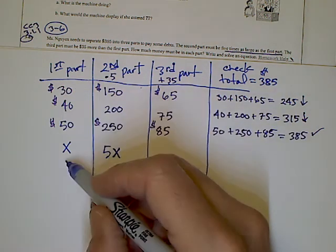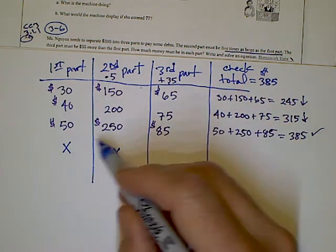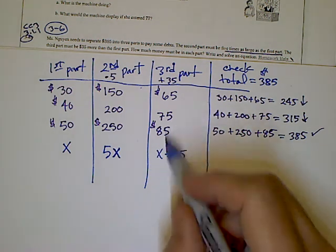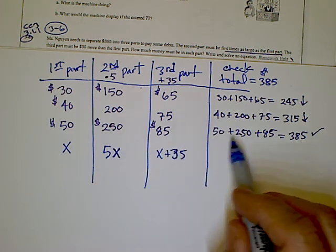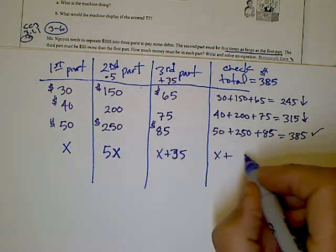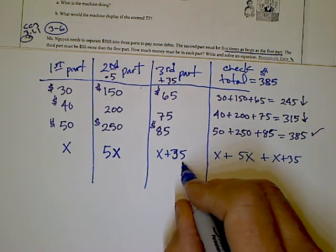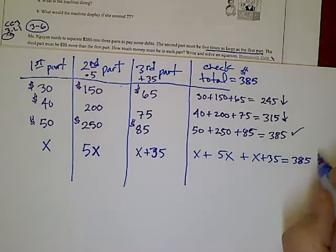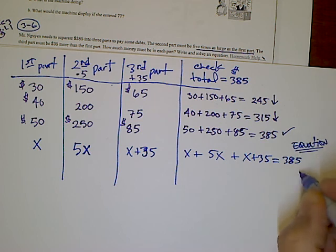In the third part, I took the first part and added 35. So here's my number x, I'm going to add 35 to it. That's the expression represented by my third part. For the check, I took each of these individual numbers and added them up. So my equation is x plus 5x plus x plus 35 equals 385. That's the equation we needed to build.